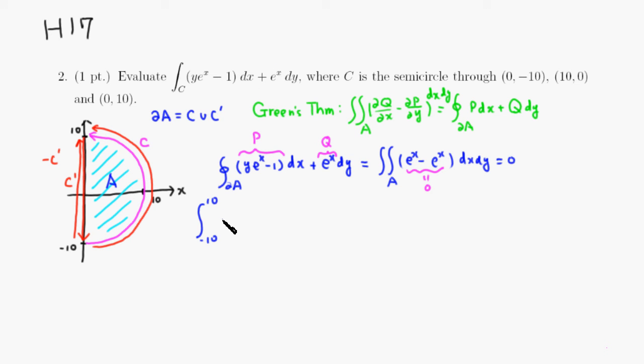So you just have to consider dy. So you have e to the x. But e to the x along this line, x is zero, e to the x is actually going to be e to the zero, which is one. Then you have to evaluate that.